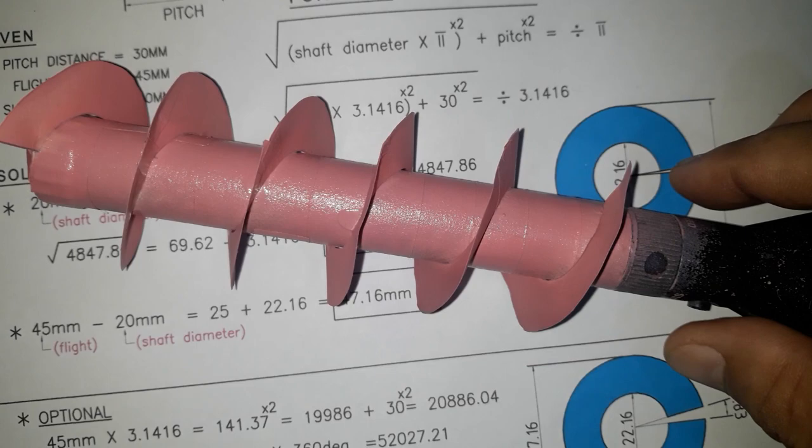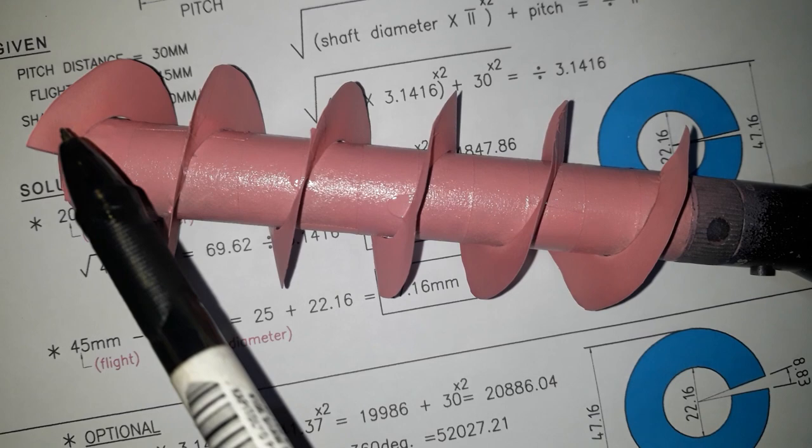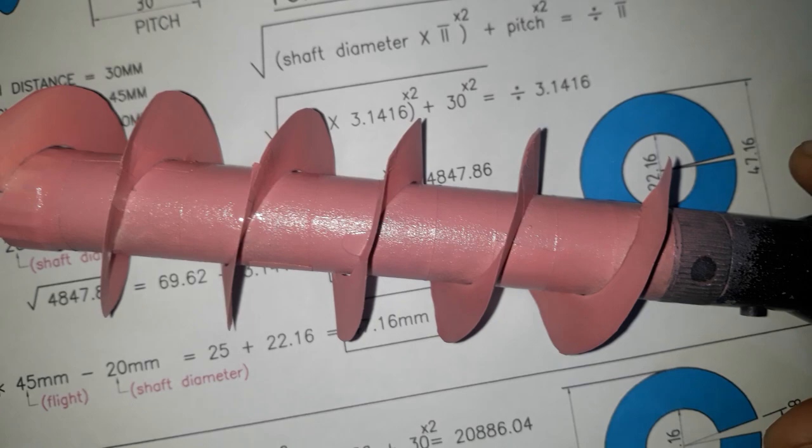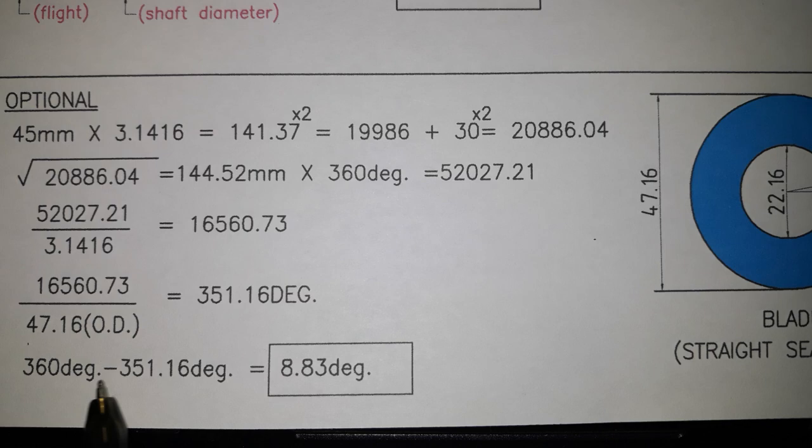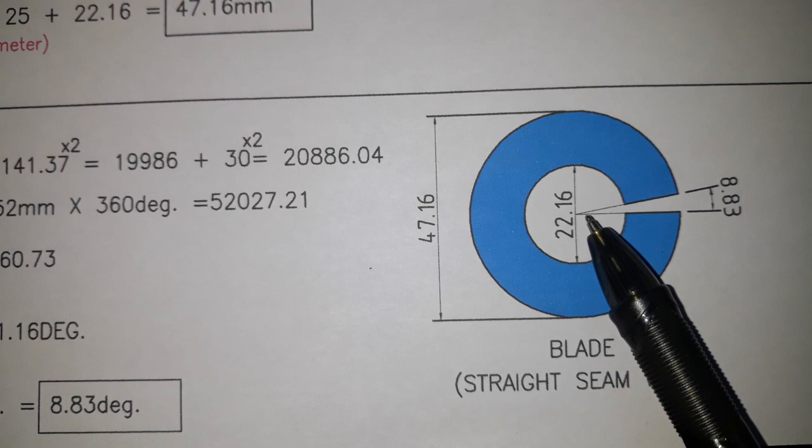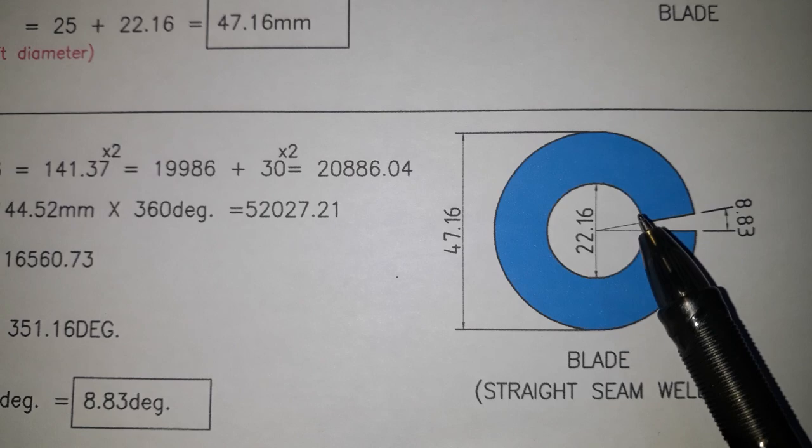I will show you the sample. If this is your blade and this is your shaft, so your seam will be here, straight like this. But anyway, this is optional. In this example, the degrees is 8.83, so we will cut this degrees 8.83 for you to be able to make your seam straight.